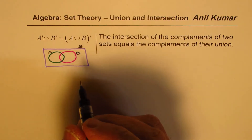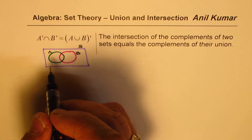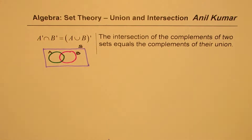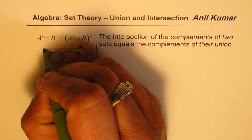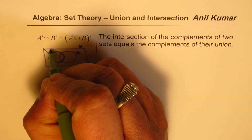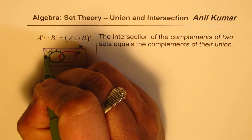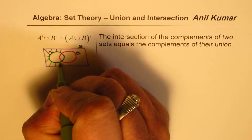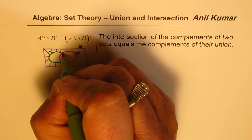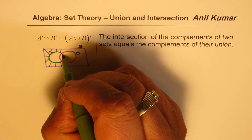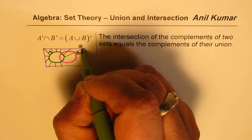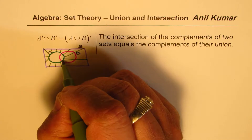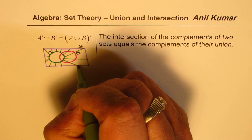When we say complement of A, what does that mean? Complement of A means outside A — everything which is not contained in A. So this is the complement of A. It also includes the portion inside B. So that is all the complement of A.